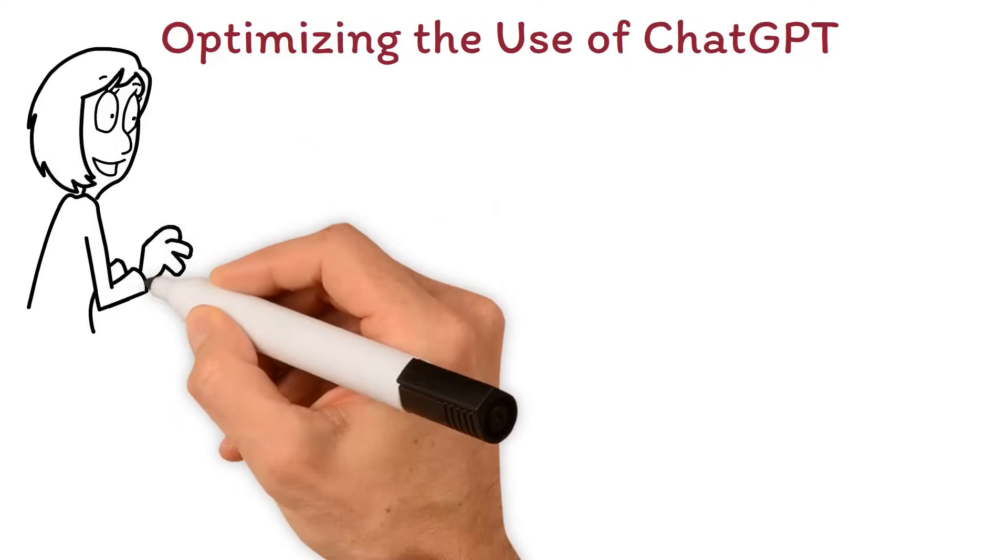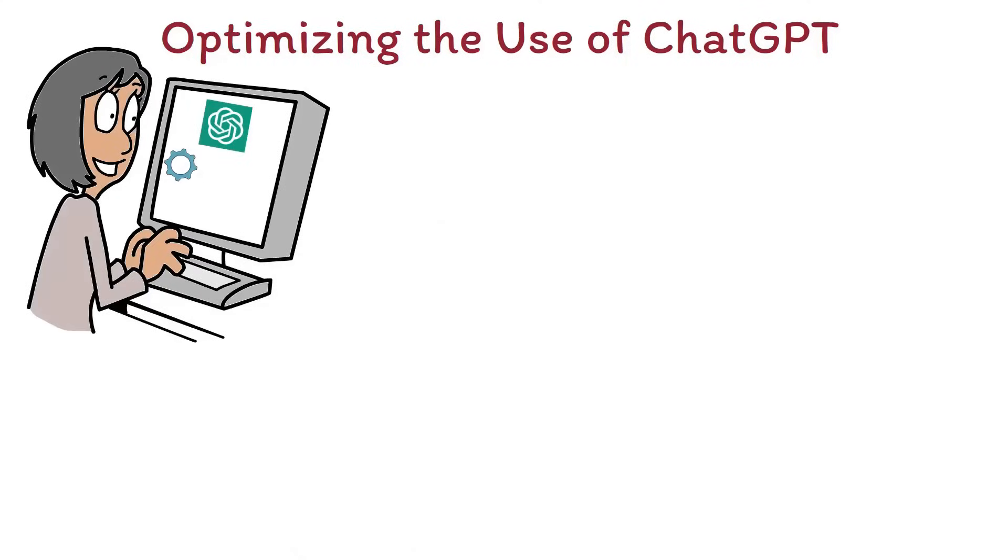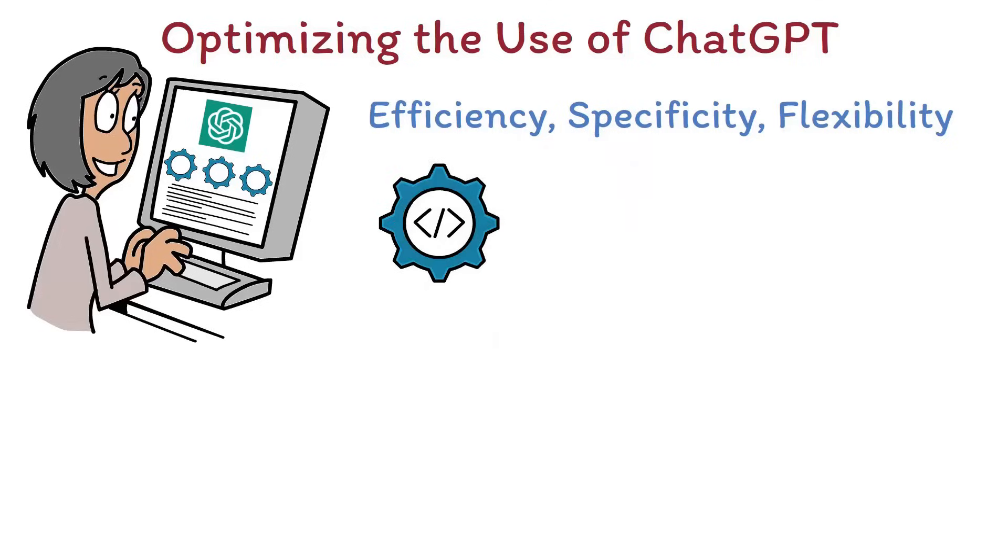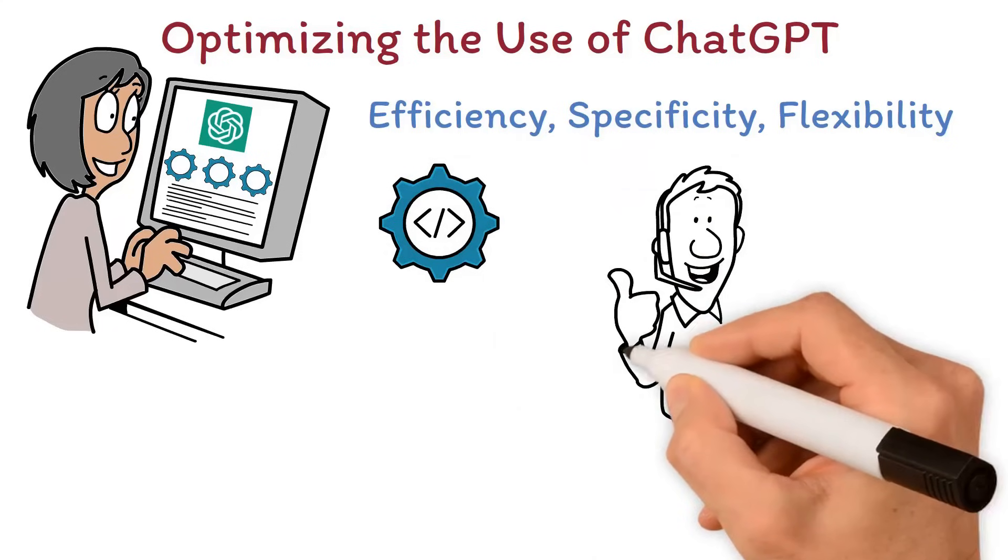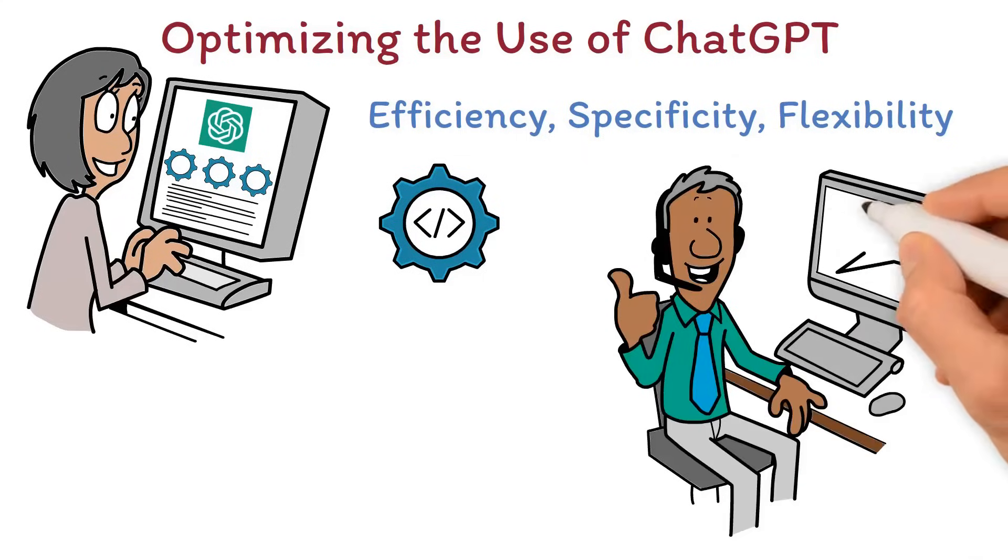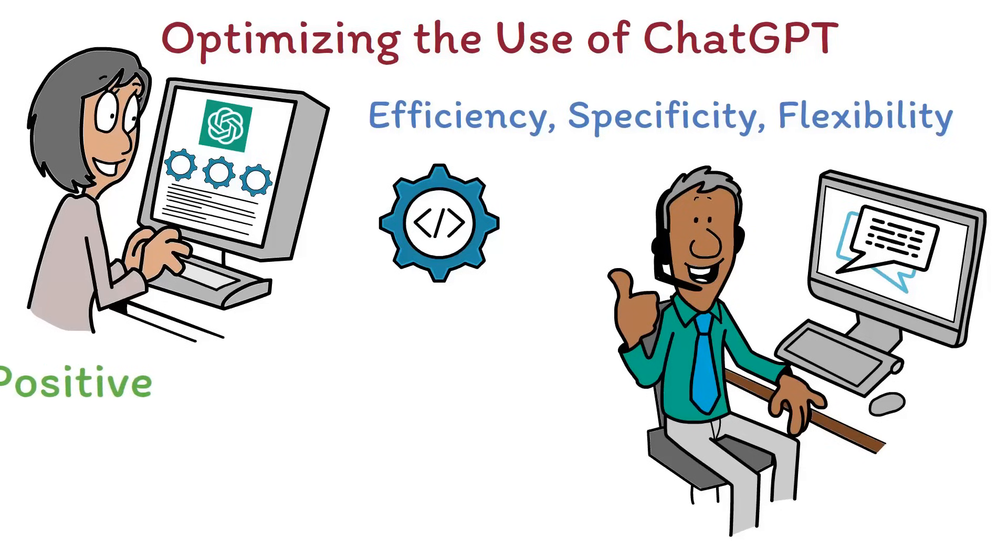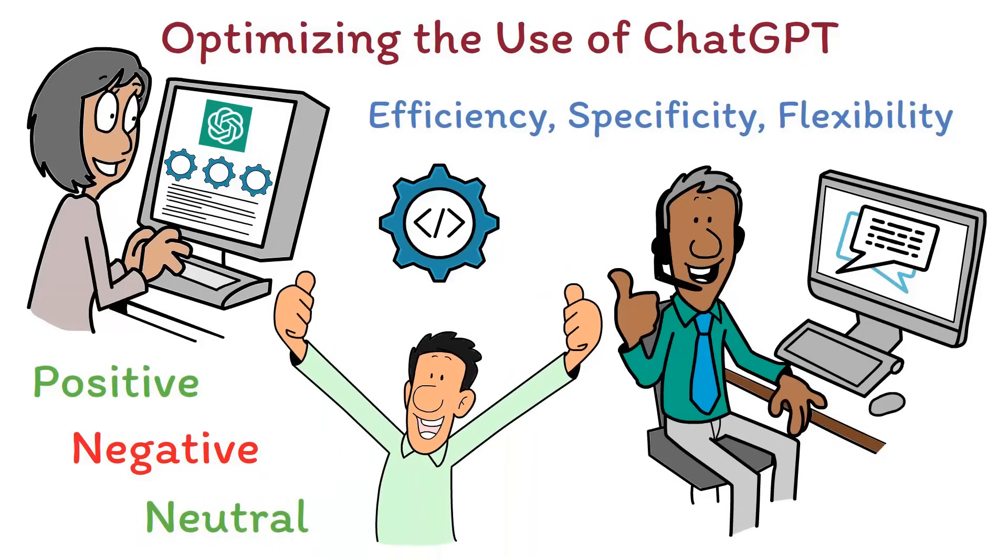Integrating plugins into ChatGPT can greatly optimize its use, particularly in terms of efficiency, specificity, and flexibility. For example, a plugin designed for sentiment analysis can enhance ChatGPT's use in customer service by determining whether a customer's message is positive, negative, or neutral. This allows for tailored responses and thus improves customer interactions.